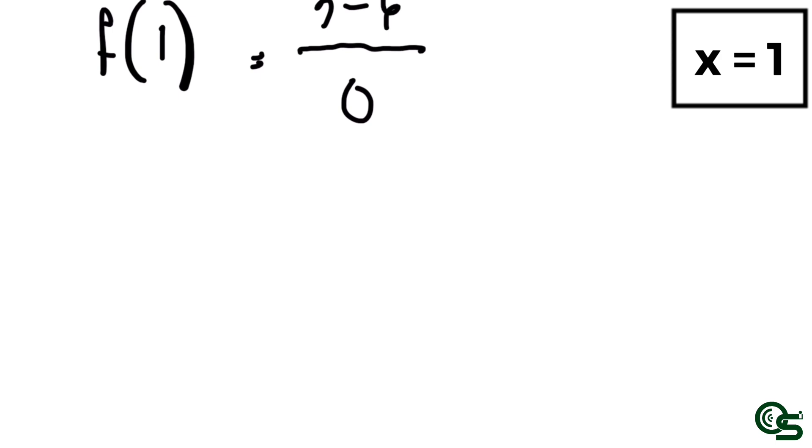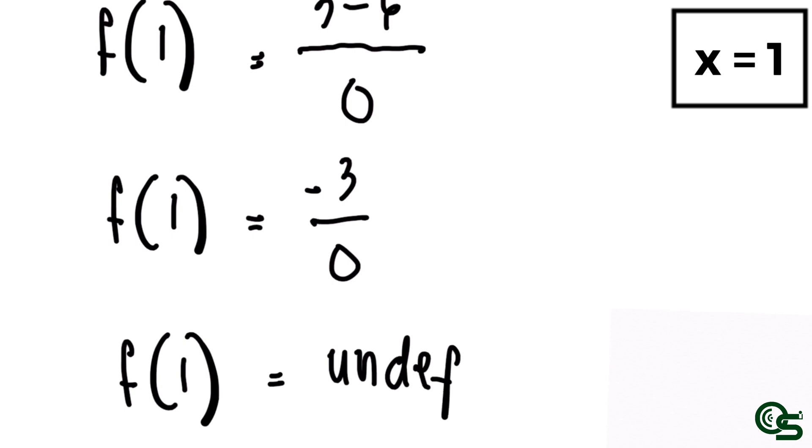Apply the operation in the numerator. Then f(1) is equal to negative 3 divided by 0. Simplifying, f(1) is equal to undefined.